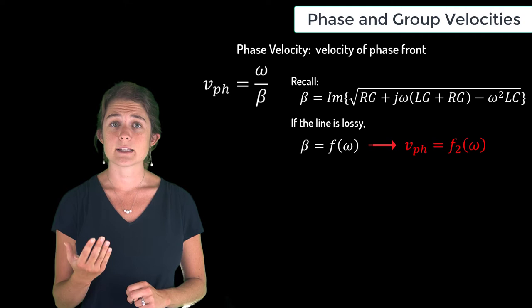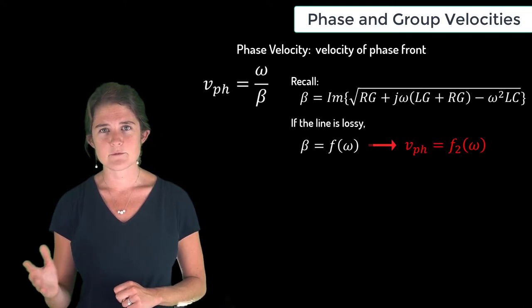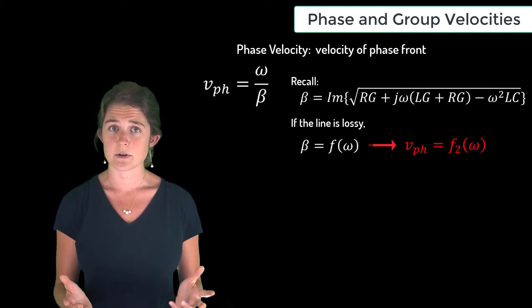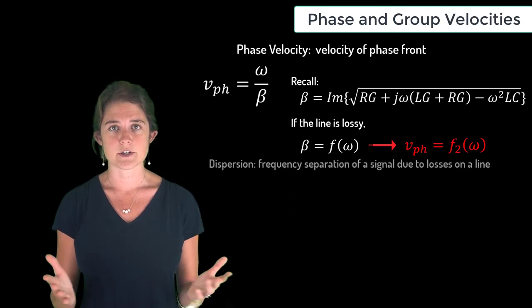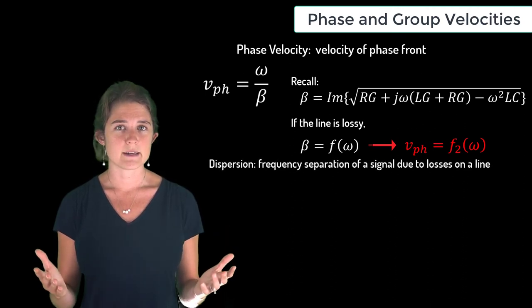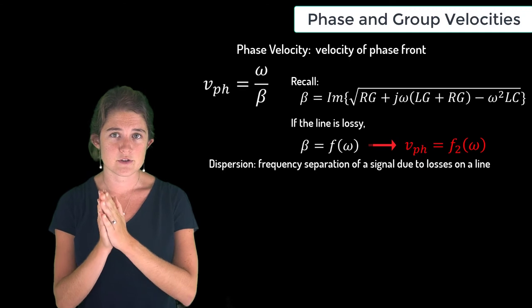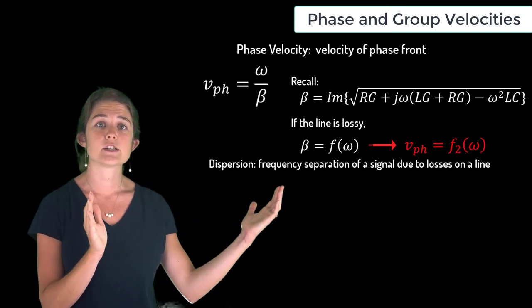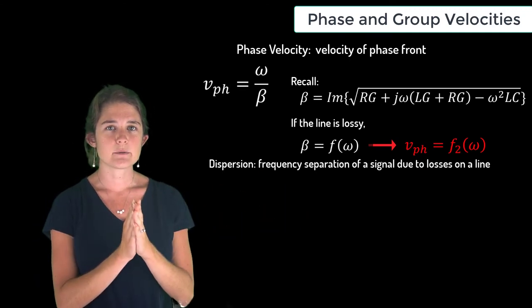This means that some frequencies travel faster than other frequencies, which is known as dispersion. When a wave packet containing several frequency components travels a long distance on a dispersive line, some frequency components will fall behind while others race ahead, which causes distortion of the signal.